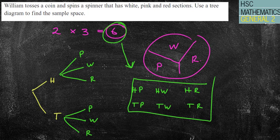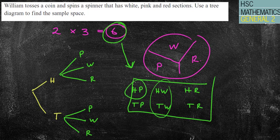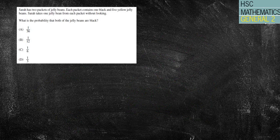My sample space will be a head and a pink, a head and a white, a head and a red, a tail and a pink, a tail and a white, a tail and a red, which gives us those six options. And that's it. So they might say, what's the probability that I throw a white? Well, then you've got two in six chances. What's the probability that I throw a head and a pink? Then I've got one in six chances. You can answer all the questions from a tree.